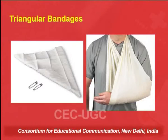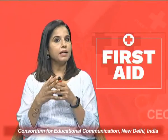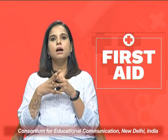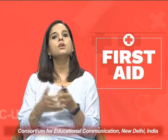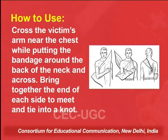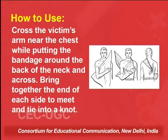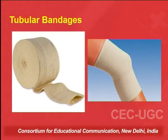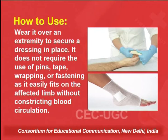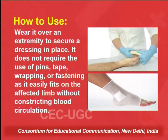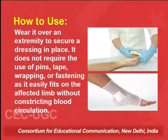The next one is triangular bandage. A triangular or cravat bandage is a piece of cloth cut into a right-angle triangle with safety pins to protect it from moving. To use: cross the victim's arms near the chest while putting the bandage around the back of the neck and across. Bring together the ends of each side to meet and tie into a knot. The next bandage is tubular bandage. To use the tubular bandage: wear it over an extremity to secure a dressing in place. It does not require the use of pins, tape, wrapping, or fastening as it easily fits on the affected limb without constricting blood circulation.